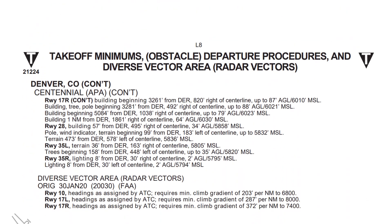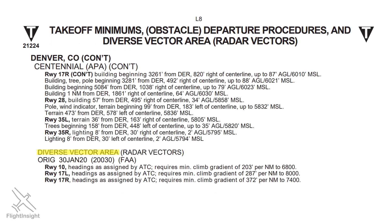The same entry in the Terminal Procedures publication lists the Diverse Vector Area. For our runway, we're given a minimum climb gradient in order to comply. With the Diverse Vector Area, ATC assumes responsibility for terrain clearance. But even if we're Part 91 and don't legally have to follow climb gradients, they're going to assume we're at least making this minimum 372 feet per mile, so make sure to read up on these.